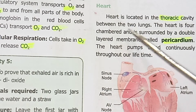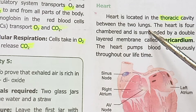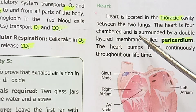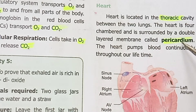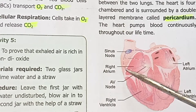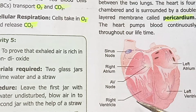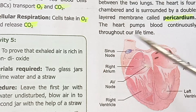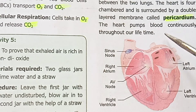The heart is located in the thoracic cavity between the two lungs. The heart pumps blood continuously throughout the body.